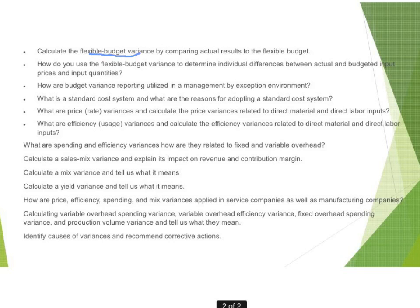I can't emphasize this enough: we're going to look at the inputs — direct material, direct labor, and overhead — going into production. You're going to have to analyze budget variances against the standard cost system and the reasons for adopting the standard cost system. You're going to have to know price variance and efficiency variances for both direct labor and direct materials.